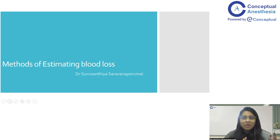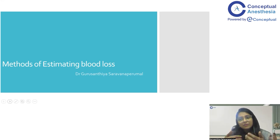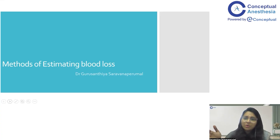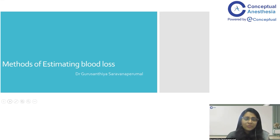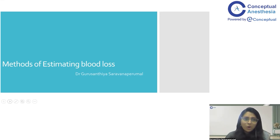How can you estimate blood loss and what are the ways to mitigate any tough situations? There are also non-emergent surgeries like total hip replacement or total knee replacement wherein you can see a minimal amount of blood loss, with or without a tourniquet being used. In a non-emergent situation, you can estimate the blood loss even in the postoperative period. This lecture will cover how to estimate in both emergent and non-emergent situations.